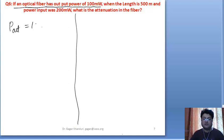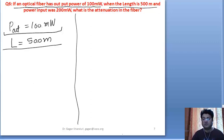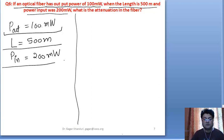P_out is given as 100 milliwatts when the length is 500 meters. The second information is that the power input was 200 milliwatts, so P_in is 200 milliwatts. These are the three pieces of information, and it's asking what is the attenuation in the fiber.